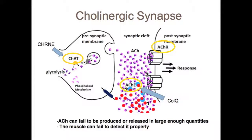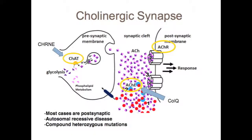In CMS patients, acetylcholine can fail to be produced or released in large enough quantities, or the muscle can fail to detect it properly. Although most cases are postsynaptic with the majority caused by acetylcholine receptor deficiencies, the disease can arise from other genetic deficiencies in the pathway as well. CMS is an autosomal recessive disease, but compound heterozygous mutations have also been discovered.